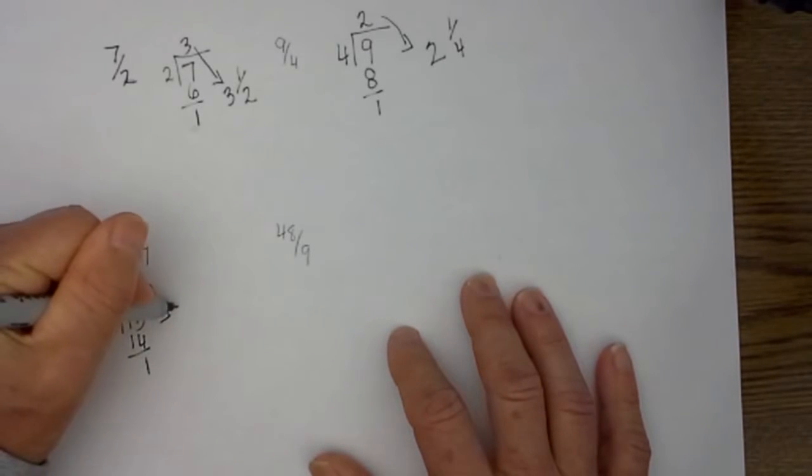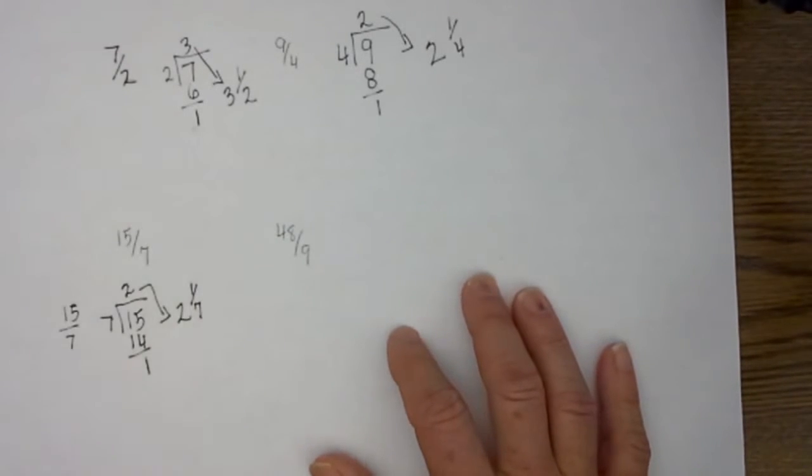I then move the 2 over here. The 1 becomes the numerator, and the 7 becomes the denominator.